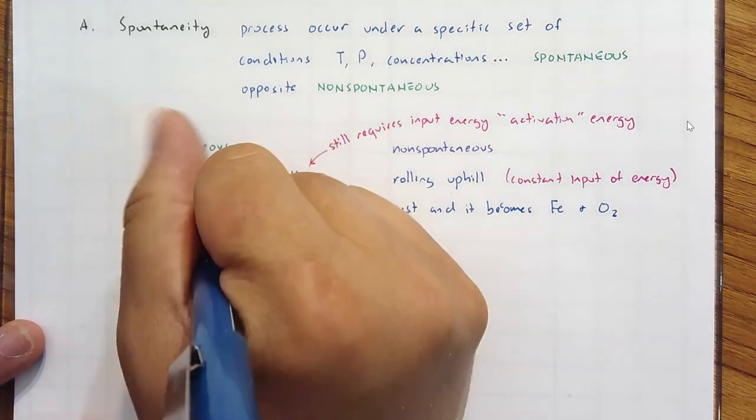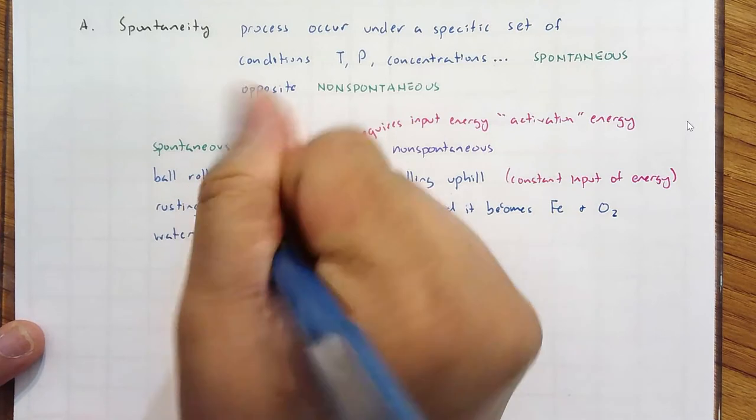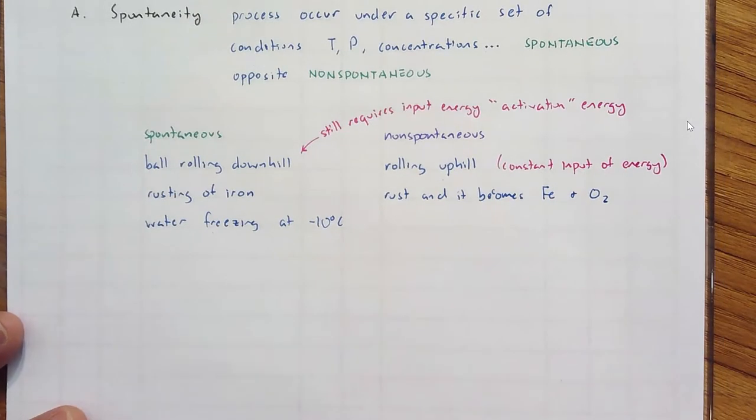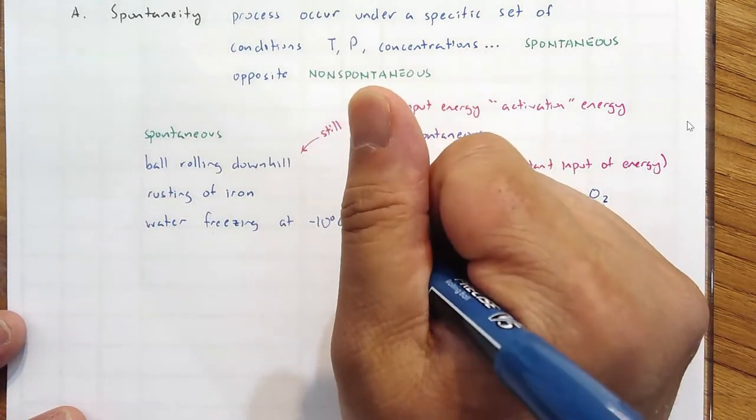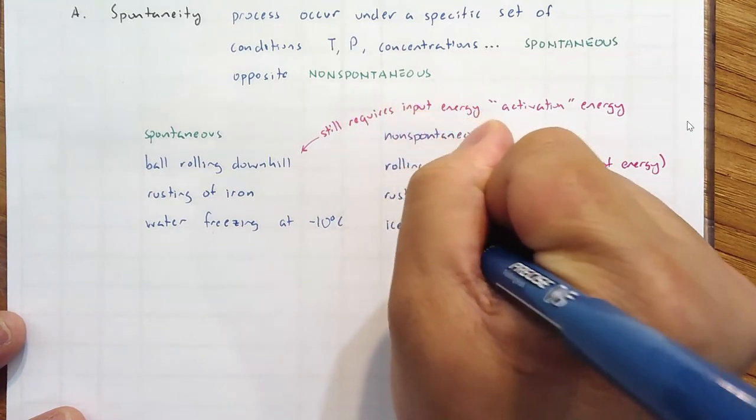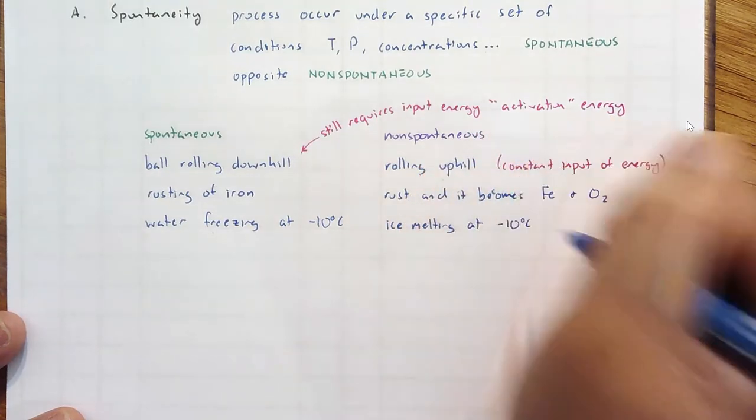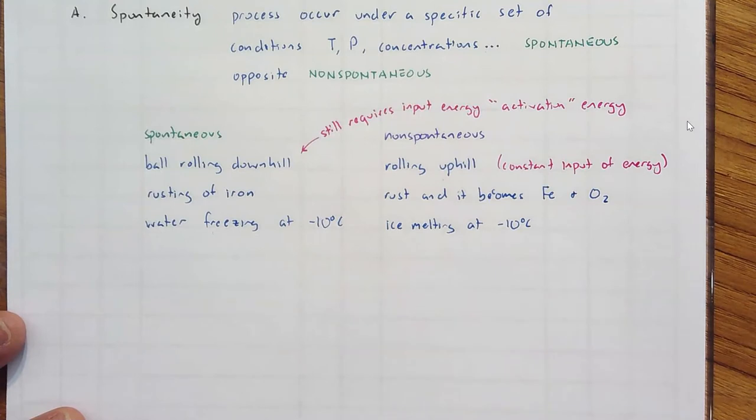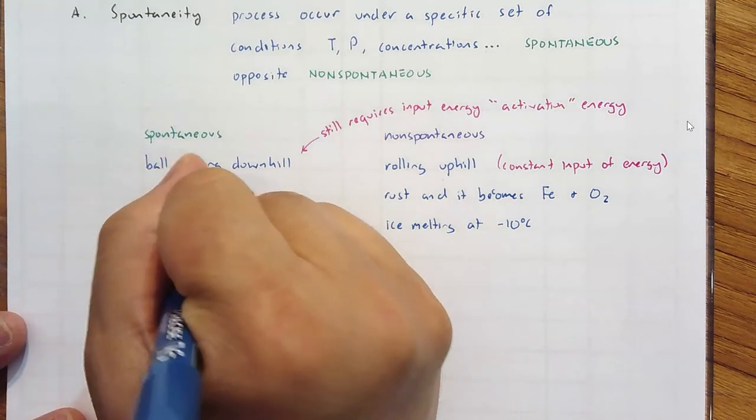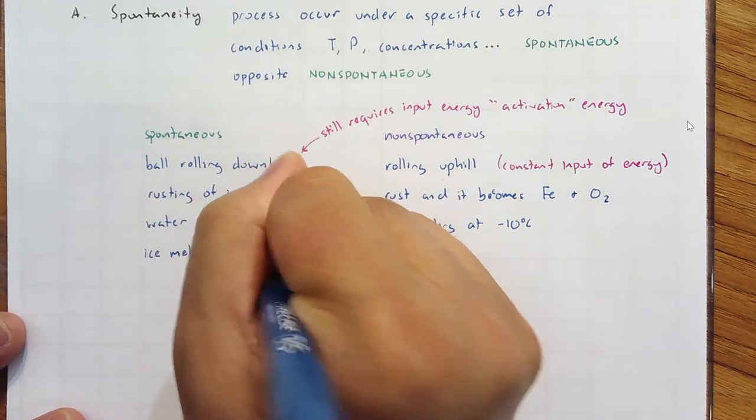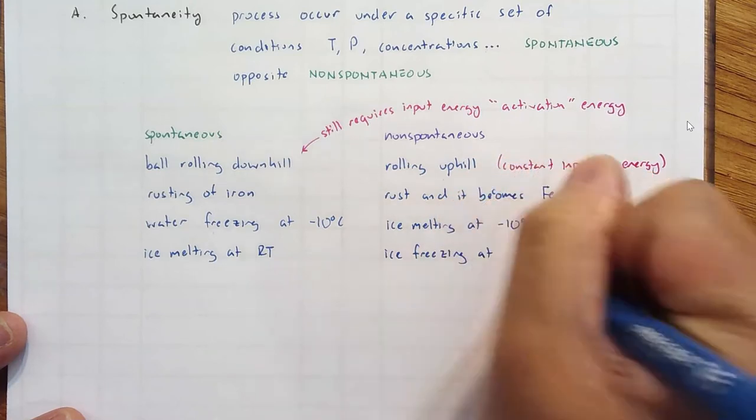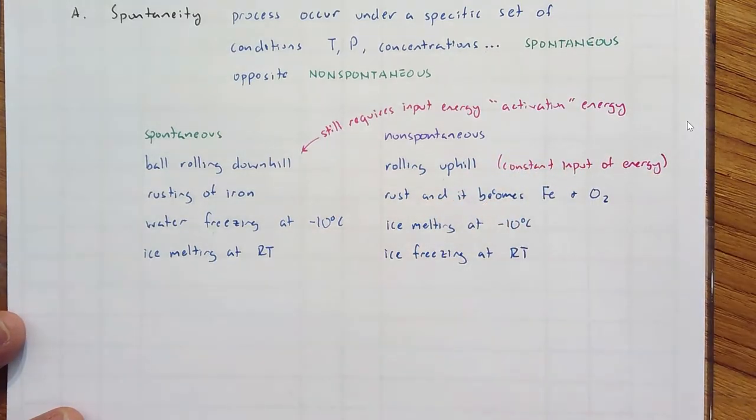Another process: water freezing at negative 10 degrees C - that seems pretty obvious as spontaneous. In contrast, ice melting at negative 10 degrees C is non-spontaneous. One last example: ice melting at room temperature versus ice freezing at room temperature.